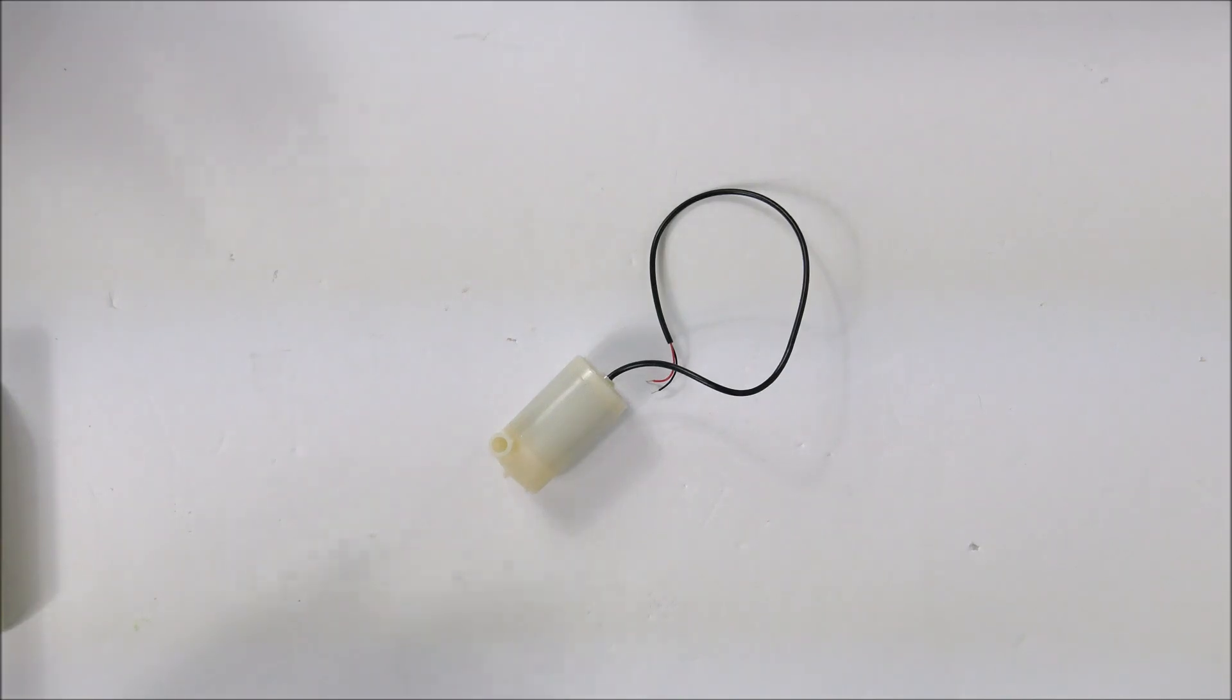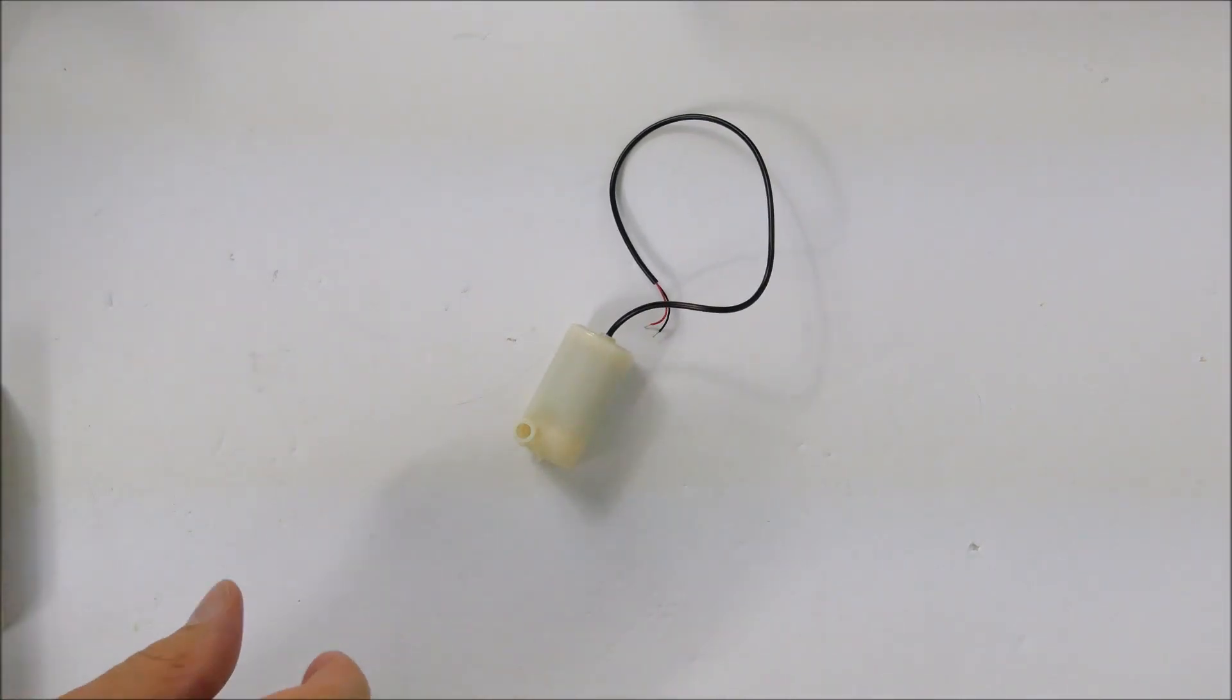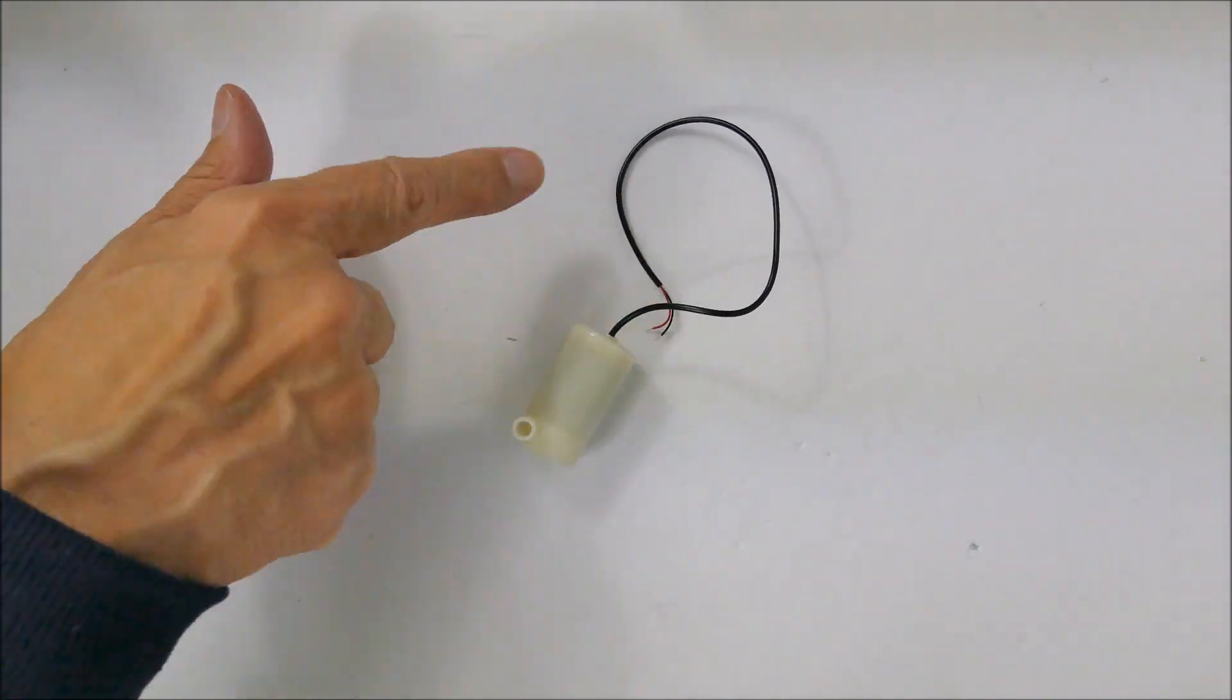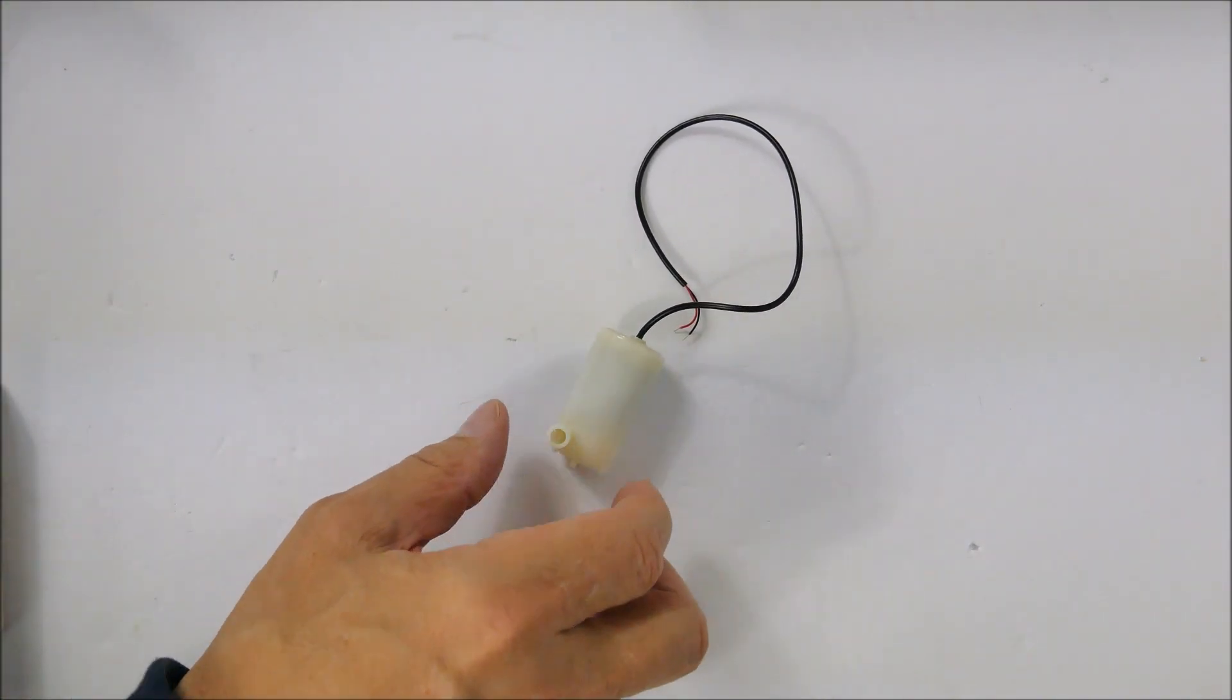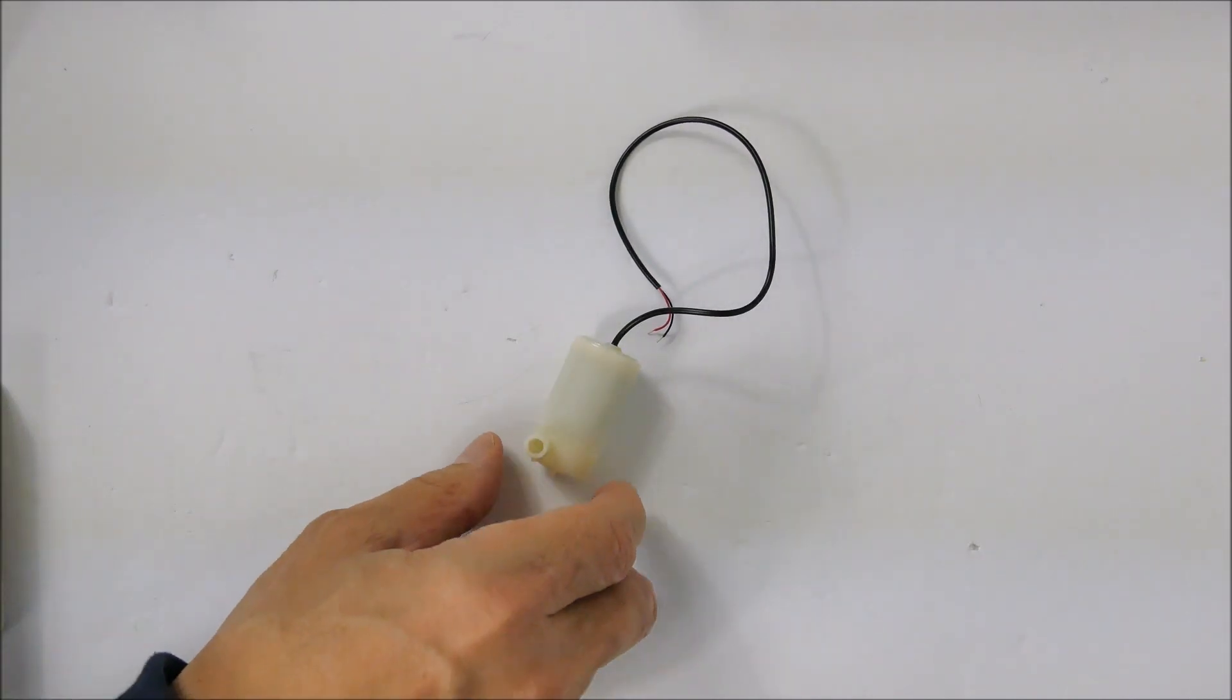For my latest project I need to find a way to turn on these little aquarium pumps. I want to use a low voltage FET that I can drive directly from 3.3 volt logic.